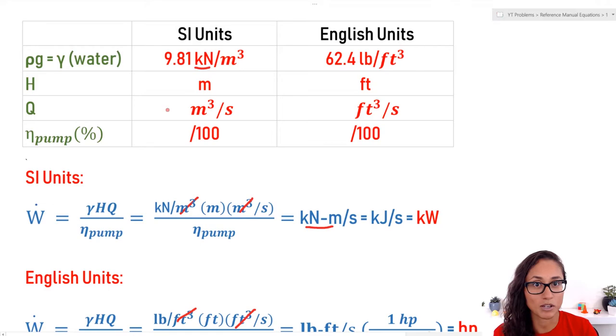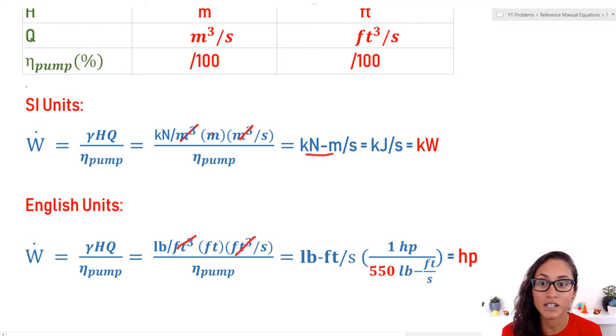Now Q, we have cubic meters per second or cubic feet per second. So as we mentioned earlier, Q is V times A, which is meters per second times meters squared. And that gives you these units. Pump, make sure you divide it by hundred.